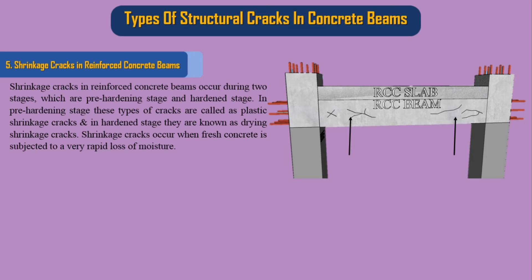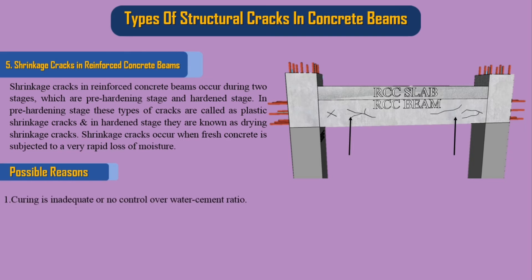Shrinkage cracks occur when fresh concrete is subjected to a very rapid loss of moisture. Possible reasons: 1. Curing is inadequate or there is no control over the water-cement ratio. 2. Usage of an excessively rich mix. 3. Shrinkage reinforcement, if any, is insufficient.